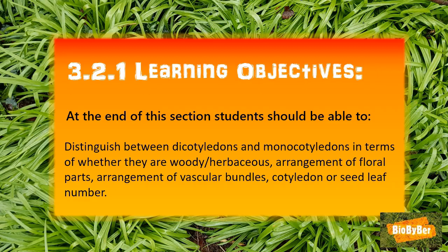Hi biologists, let's start by looking at the learning objectives for this lesson. At the end of this section, following the biology syllabus, you should be able to distinguish between dicotyledons and monocotyledons in terms of whether they are woody or herbaceous, arrangement of floral parts, arrangement of vascular bundles, and cotyledon or seed leaf number.